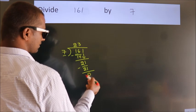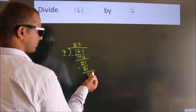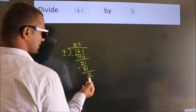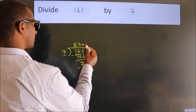After this, no more numbers to bring down. And we got remainder 0. So this is our quotient.